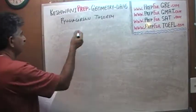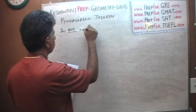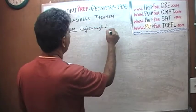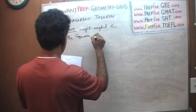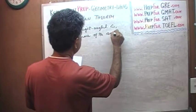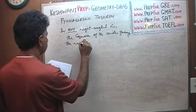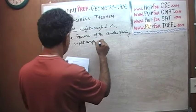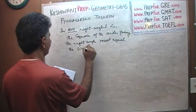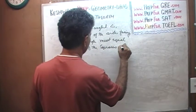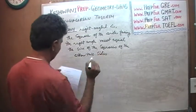So here we go. What the Pythagorean Theorem says is that if you have a right angle triangle — in any right angle triangle — the square of the side facing the right angle must equal the sum of the squares of the other two sides. That's what it says.